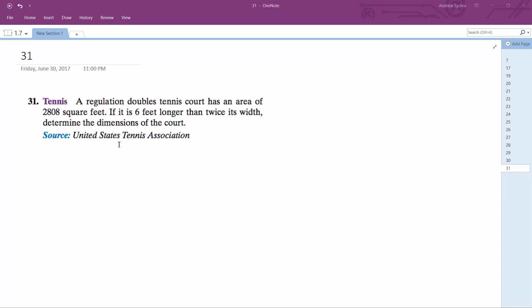A regulation doubles tennis court has an area of 2,808 square feet. If it is six feet longer than twice its width, determine the dimensions of the court.